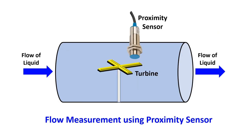Before understanding the programming we need to understand how a proximity sensor will sense the flow. Assume that this is a pipe in which we have mounted a turbine and proximity sensor. Now if the fluid flows through, this turbine will rotate — and since the turbine is made of metal material, as soon as it passes through the sensor it will generate one pulse. So in this way the flow is converted into a number of pulses.